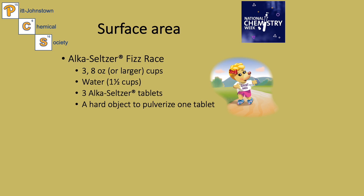Alka-Seltzer contains both a base, which is sodium bicarbonate, and an acid, citric acid, which is usually found in fruit juices. It also has the pain reliever acetylsalicylic acid, which is known as aspirin, so it has two acidic components and a base.